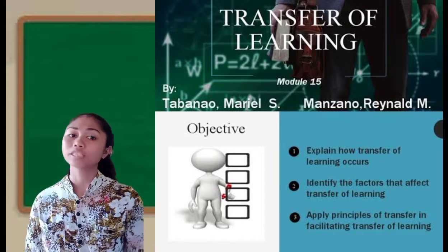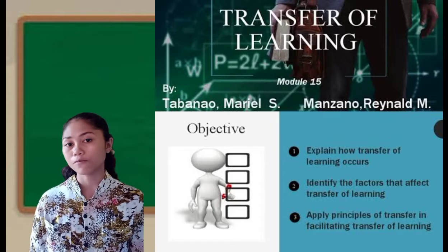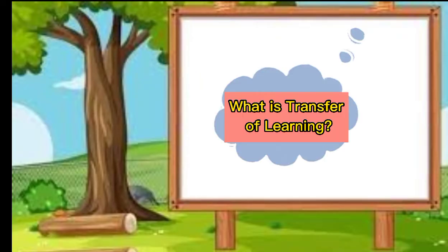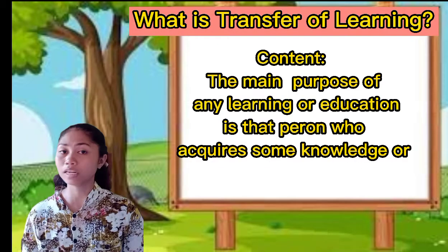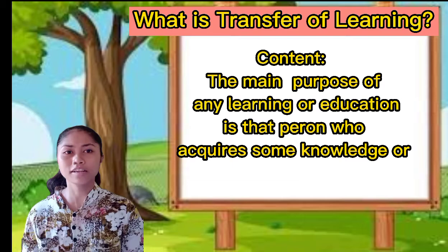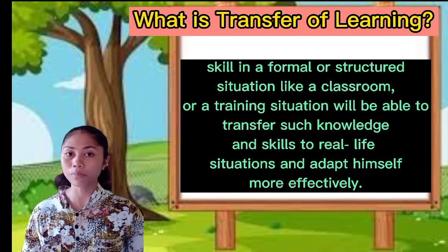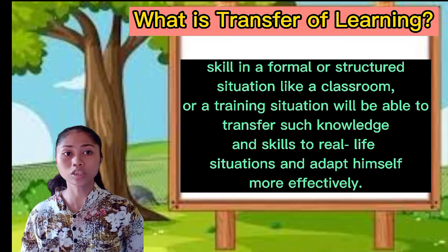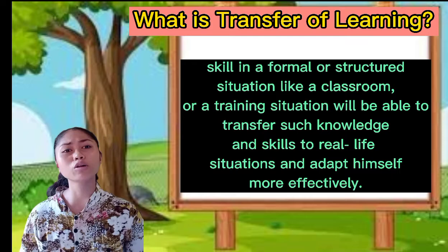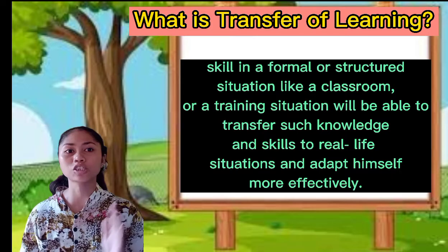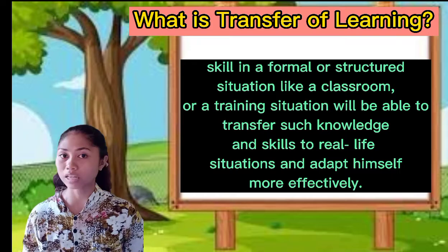We're also going to discuss about the types of transfer, conditions, and principles of transfer. The main purpose of any learning or education is that a person who acquires some knowledge or skill in a formal or structured situation, like a classroom or a training situation, will be able to transfer such knowledge and skills to real-life situations and adapt more effectively.